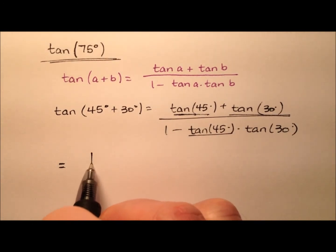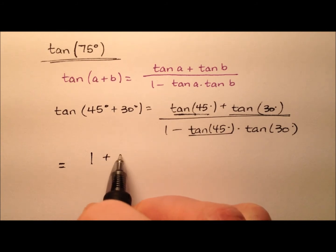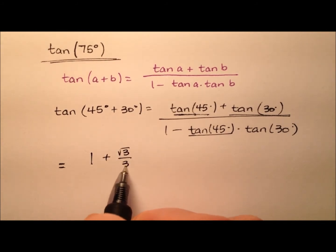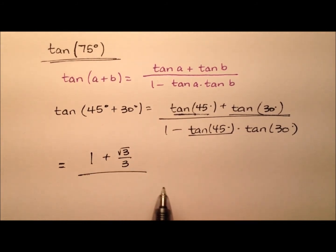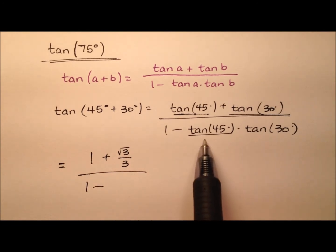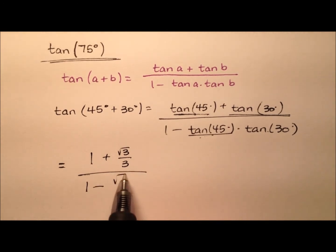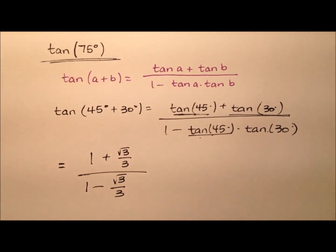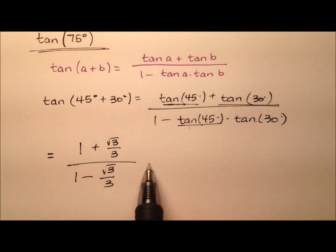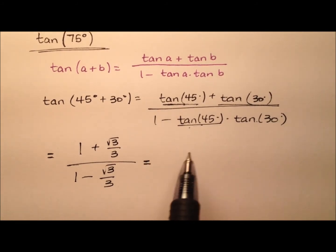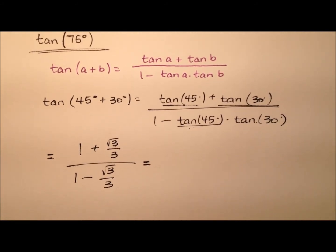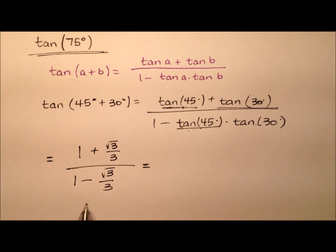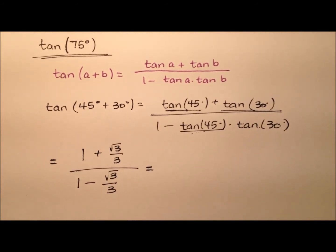For the numerator, I'll have 1 plus radical 3 over 3. And for the denominator, it'll be 1 minus — and then 1 times — so really it's just going to be radical 3 over 3. It looks like we have a nice complex fraction, where the numerator and denominator both contain their own fractions.